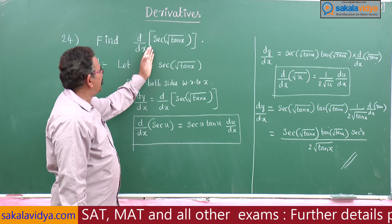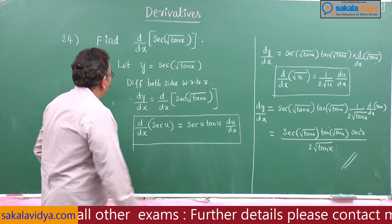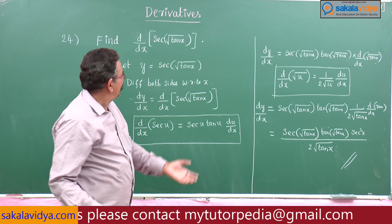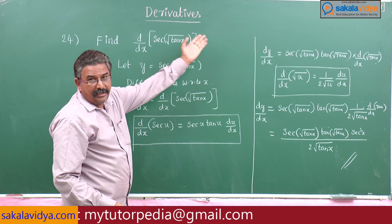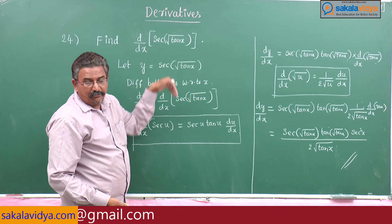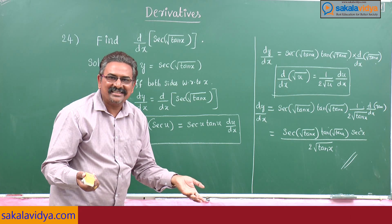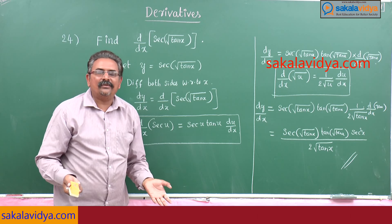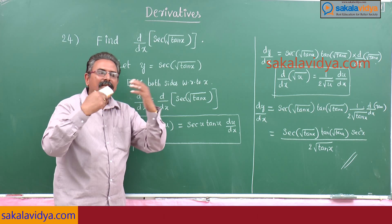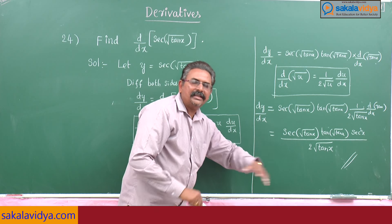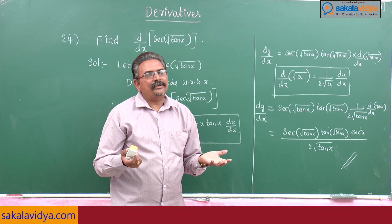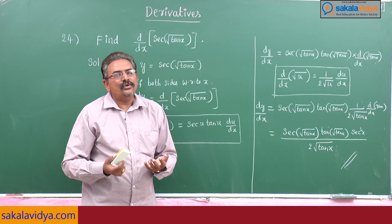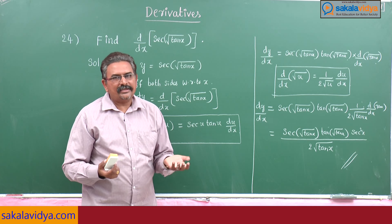For competitive entrance examinations, you need not do all these lengthy steps. Directly we can write: secant root of tan x, tan of root of tan x, into 1 by 2 root of tan x, into secant square x — that is enough. Before attempting the problem, we can visualize the final answer. That kind of strategy has to be developed to compete in any type of entrance examination.